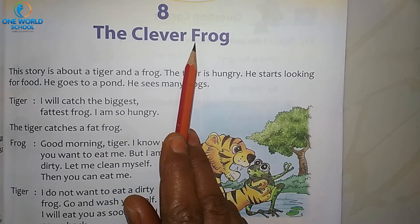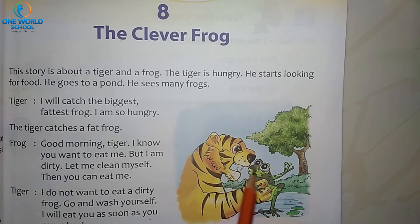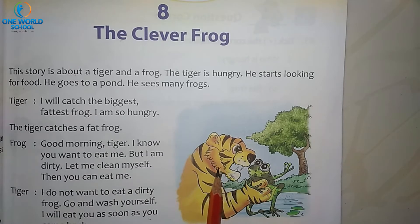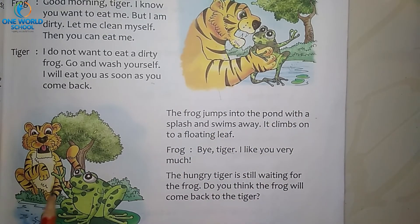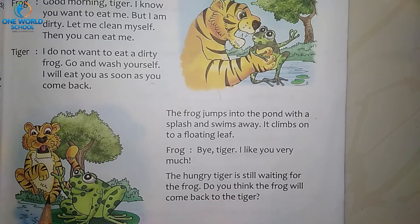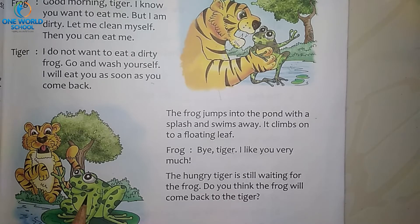Just recall what we have learned in the last class. In the last class we learned about the tiger and the frog. The tiger wants to eat the frog because he was very hungry, but the tiger didn't want to eat the dirty frog. That's why the tiger leaves the frog to clean itself, and the frog jumps over the floating leaf into the pond. Then the frog says bye-bye to the tiger. In this manner the frog escapes from the tiger — that's why the frog is said to be a very clever one.